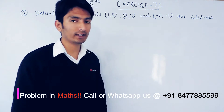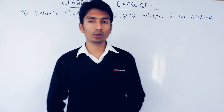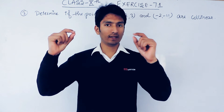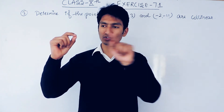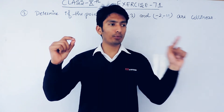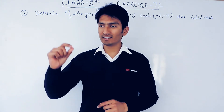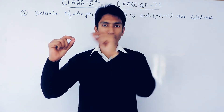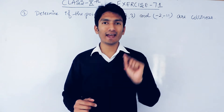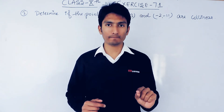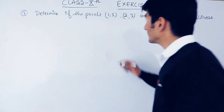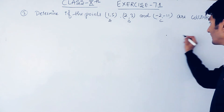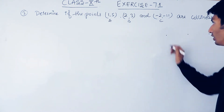Let me first tell you what collinear exactly means. If I consider three points A, B, and C, and all three points lie on the same straight line, then these three points are known as collinear points. But if the three points do not lie on a straight line, then these three points are not collinear. So if three points are collinear, they must lie on a straight line.